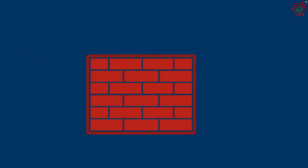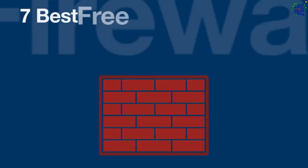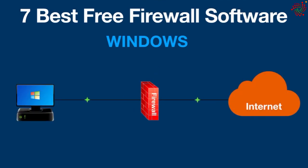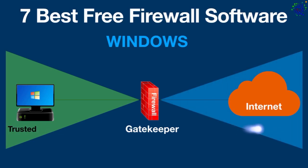Today we are going to discuss seven best free firewall software for Windows. A firewall is designed to monitor and control incoming and outgoing network traffic on a computer or network based on security rules. It acts as a barrier between trusted internal networks and untrusted external networks like the internet, allowing authorized communication while blocking unauthorized access and potential threats. Microsoft already packs Windows with a firewall, but there are also alternative and completely free firewall programs you can install.